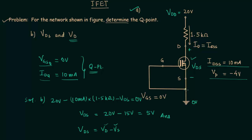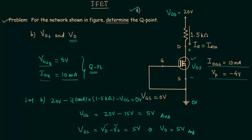This means potential at source equals 0V. VDS equals 5V. So VD minus 0V equals 5V, which implies VD equals 5V. This is our answer. In this way, we have completed part B of the problem.